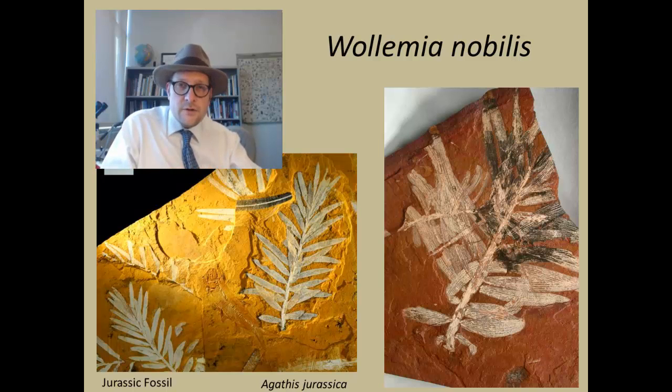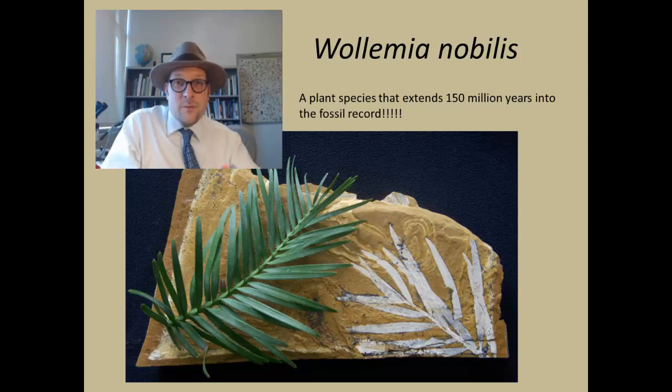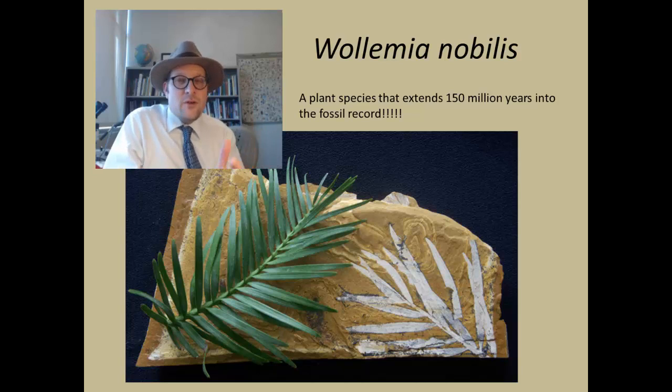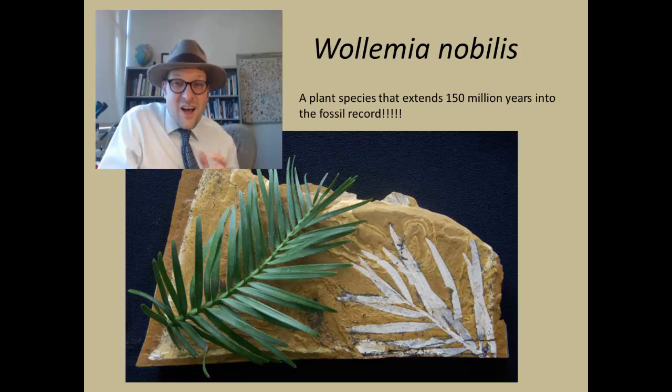Wollemia nobilis is named after David Noble, who was working as a field officer in the Wollemi National Park in the Blue Mountains of Australia. On September 10, 1994, he was exploring and discovered a weird primitive-looking forest of trees. The needles were broad and unlike any conifer he had ever seen. He took a branch back, compared it with fossils of Agathis jurassicus, and was amazed to find a fossil thought to have been extinct for over 150 million years living in the Blue Mountains of Australia — like finding a living dinosaur tree.